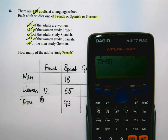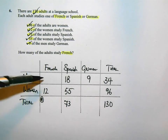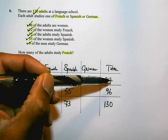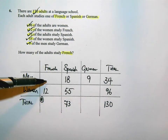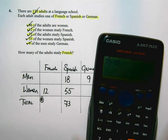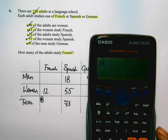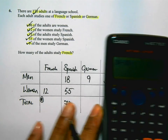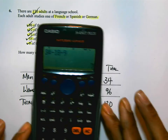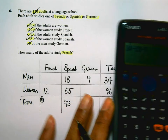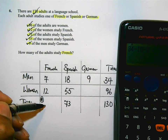What can I work out next? I can work out the number of men who studied French, because if I do 34 take away 18 take away 9, I can work out that value. So let's do that: 34 take away 18 take away 9 equals 7. So this value here is 7. Then I get to the cell that I want: 7 plus 12 is 19. And that is my answer.